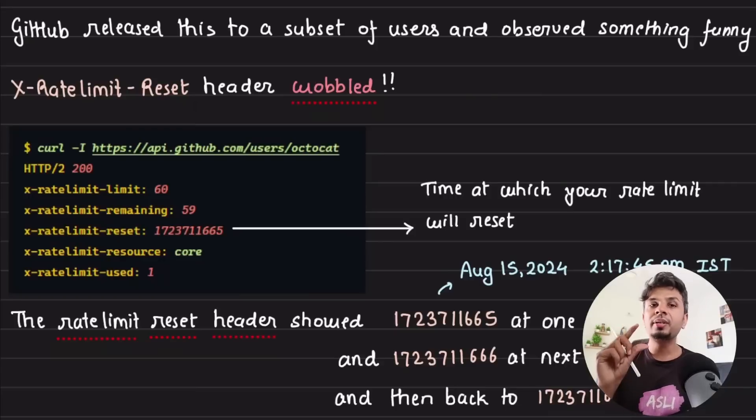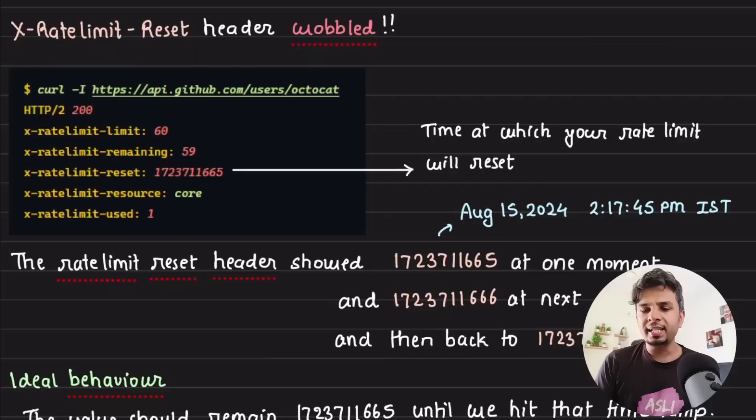Whenever you make an API call to GitHub, in the HTTP response that you get, you get rate limiting headers that tell you, after this API call, what is the remaining rate limit that you have as spare. For example, let's say you make this curl request: curl -i api.github.com/user/octocat.